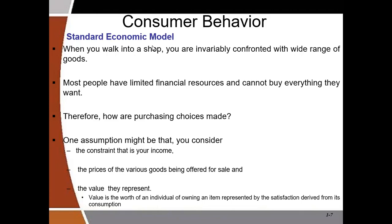To understand how choices are made, one assumption is that a consumer first looks at his income — if he cannot afford something, he should not choose it. Once he has the income, he evaluates based on the prices of various goods and services. For example, with an income of 100 units and a price of 2 units, he can buy 50 of an item.